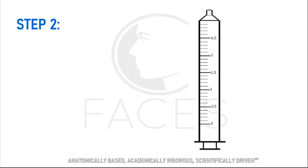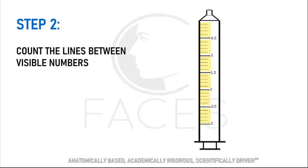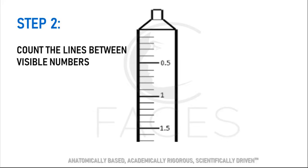In step two, you'll be counting the smaller lines that fall between the numbered bold lines. Here's how you count them. You don't count the line that you're starting with. That's considered zero. In this example, you'll see the total is five lines.